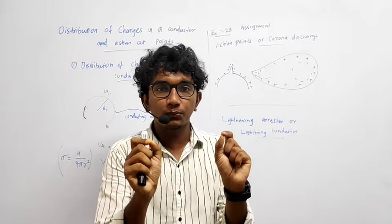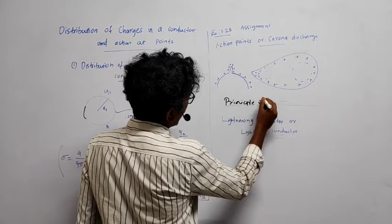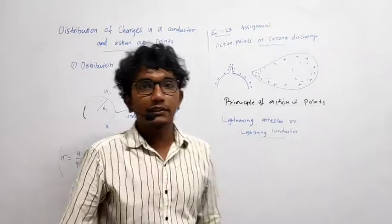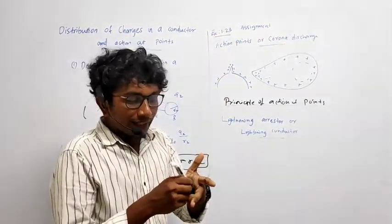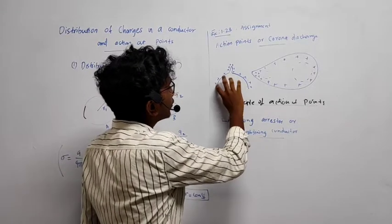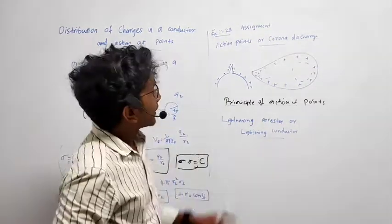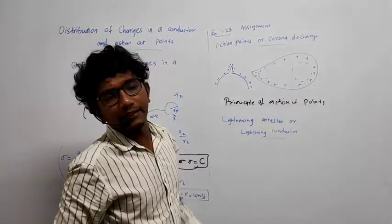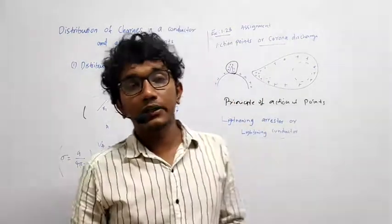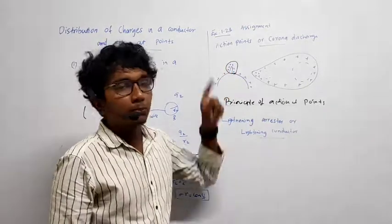First, you have to know the principle of action of points. Suppose we have a conductor that is mostly uniform, but at one portion there is a spike. At that spike, the area is less. In such cases, the charge density at the spike will be much, much higher compared to the charge density at other places. That is the principle of action of points.